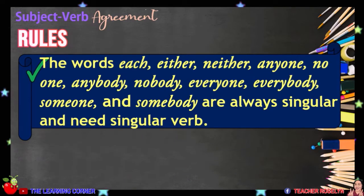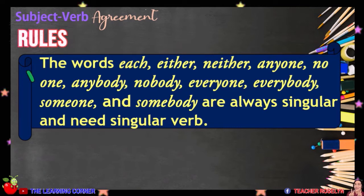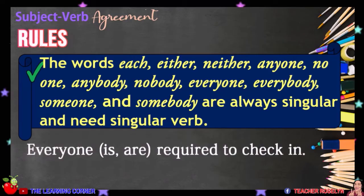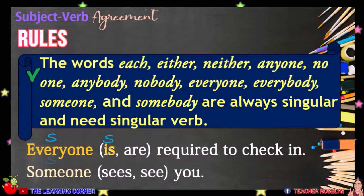The words EACH, EITHER, NEITHER, ANYONE, NO ONE, ANYBODY, NOBODY, EVERYONE, EVERYBODY, SOMEONE, and SOMEBODY are always singular and need a singular verb. For example, everyone is required to check in. Someone sees you.